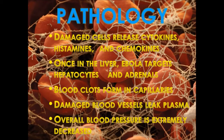Once Ebola has damaged cells, they release cytokines, histamine, and chemokines, which signal the first line of defense. Studies of humans and lab animals infected with Ebola clearly show the disease targets the lymphatic system, but there are inconsistencies in the other targets of the virus. There is strong evidence that the virus targets the liver and adrenal glands, and that in those systems it begins to affect the blood. Ebola causes severe blood clotting, particularly in the capillaries, while also working its way through the endothelial cells in the lumens, so blood vessels begin to leak plasma into surrounding tissues. All this combined creates an extreme drop in blood pressure.